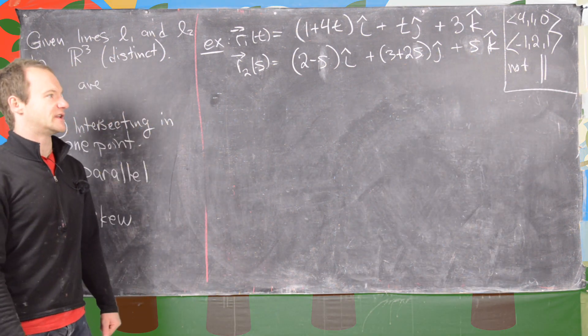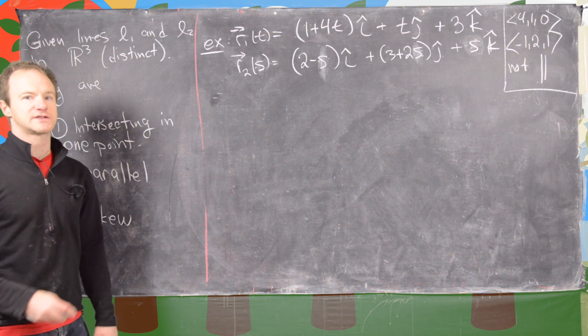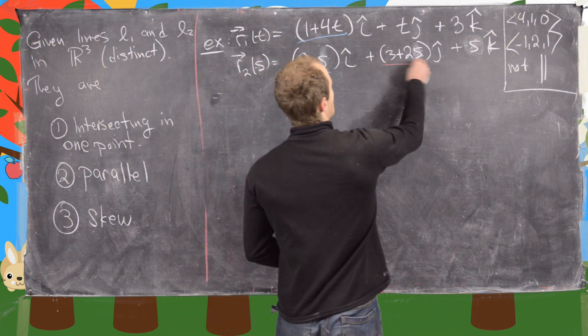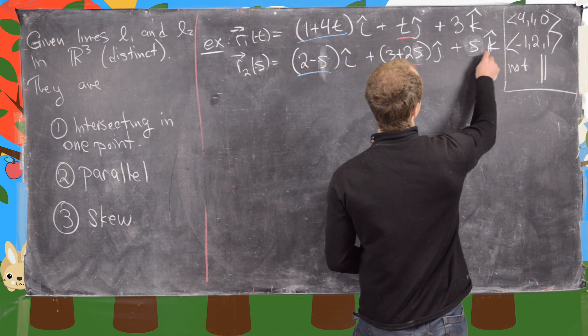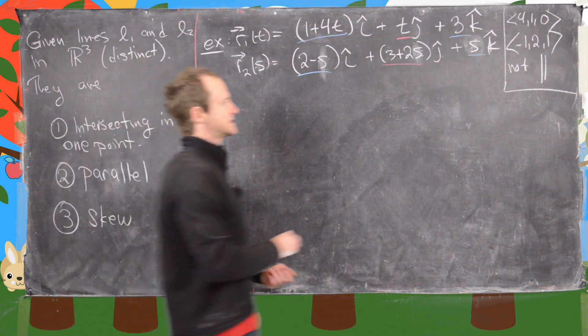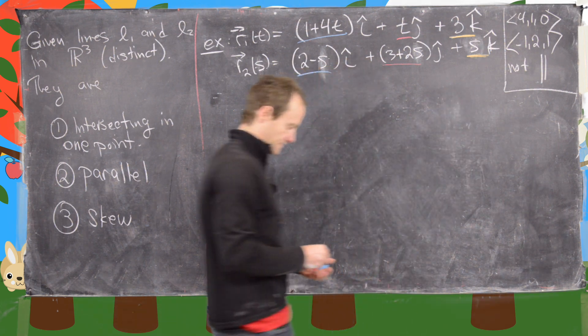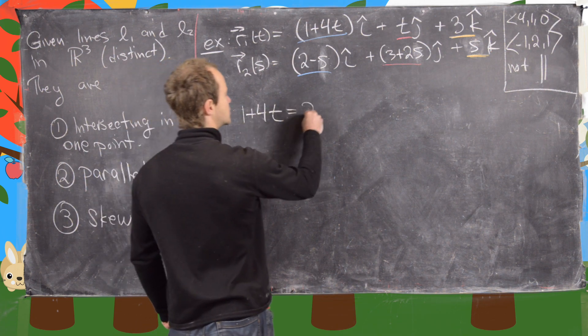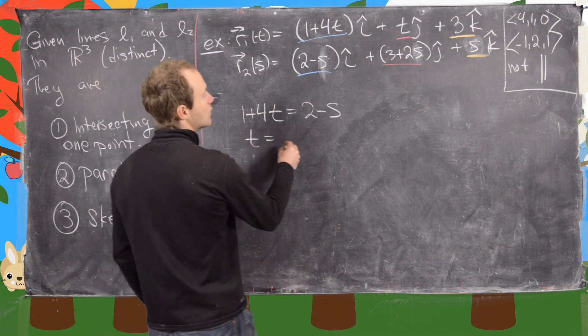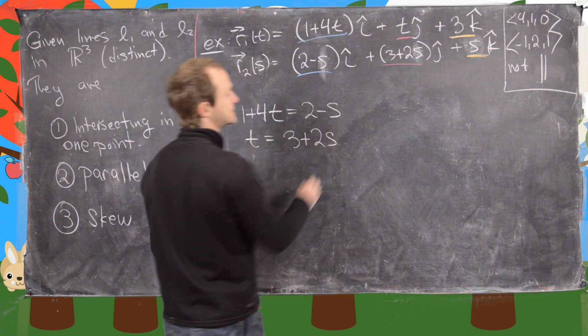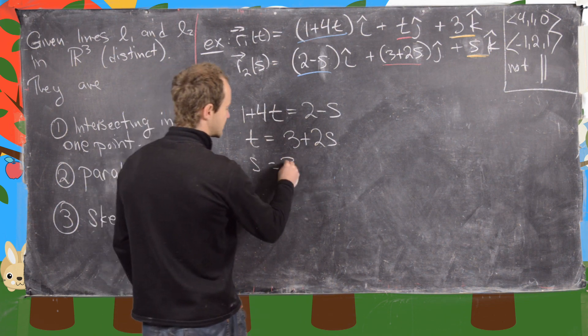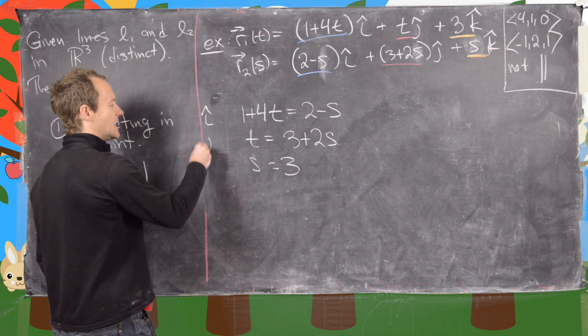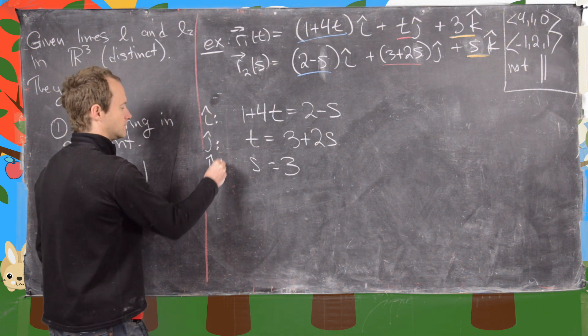So they're not parallel, which means they have a chance of intersecting. We'll do the same thing as the first example, which is set all of the components equal to each other. We'll have a system of three equations and two unknowns. Notice our equations are given by 1 plus 4t equals 2 minus s, then t equals 3 plus 2s, and finally s equals 3. This is what we're getting from the i, j, and k components.